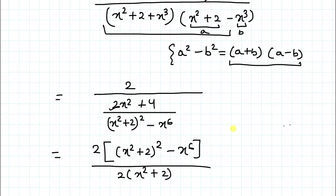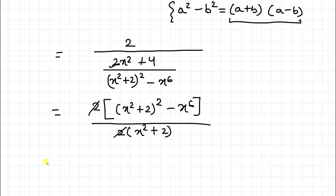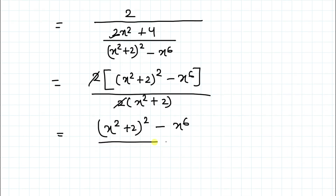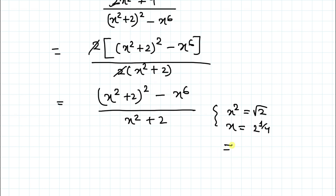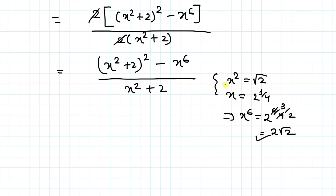Here I have taken 2 as common, so the 2's cancel out. We are left with (x² + 2)² − x⁶ all divided by (x² + 2). We know x² = √2 and x = 2^(1/4). To find x⁶, we take the 6th power of both sides: x⁶ = 2^(6/4) = 2^(3/2) = 2√2.